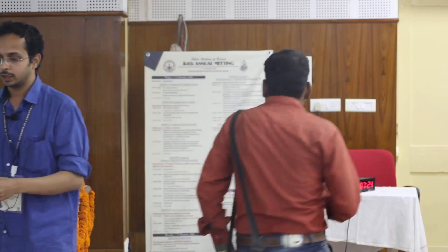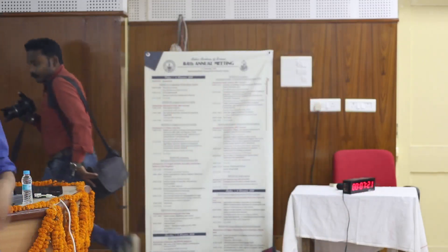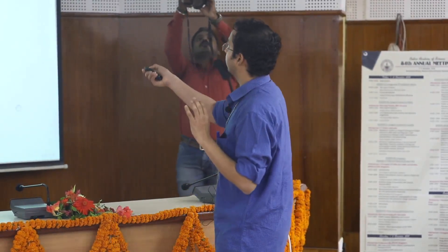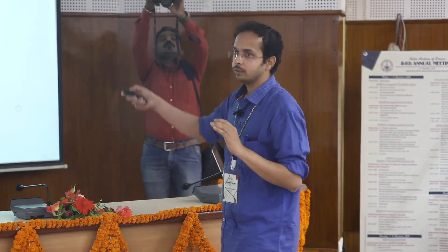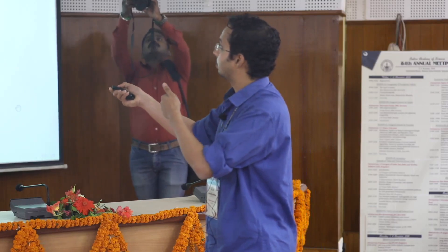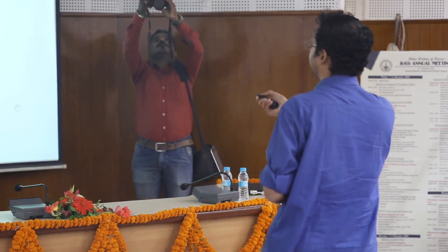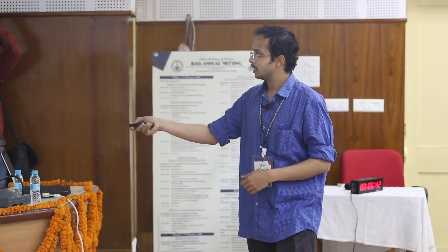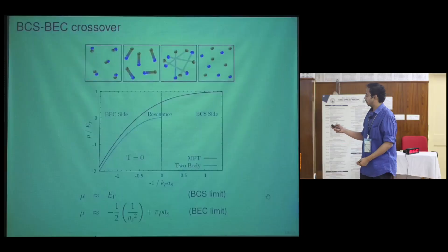Let me give a quick introduction to what happens when interactions are introduced — first without gauge fields. For a fermionic gas with weak attraction, there is pairing but the bond length is much larger than the average inter-particle spacing. As you increase the attraction, the bond length decreases, the fermions form pairs that are effectively bosons, and these bosons Bose-condense. This is the BCS-to-BEC crossover. The chemical potential goes from roughly the Fermi energy in the BCS limit to minus half the binding energy of the pair in the BEC limit.